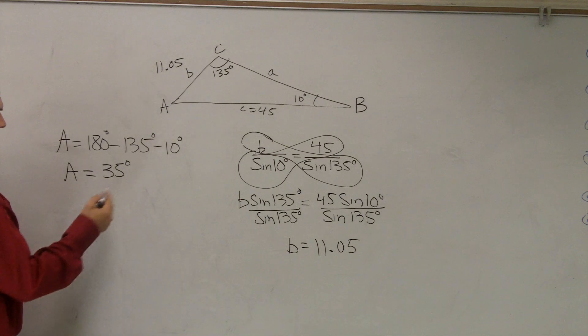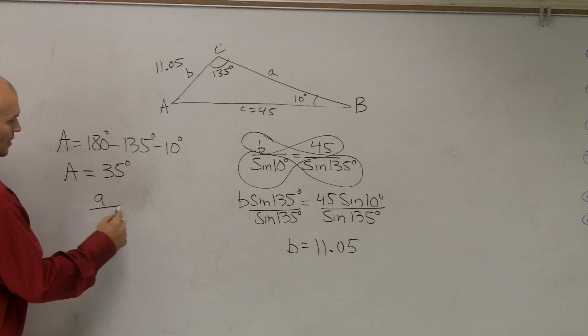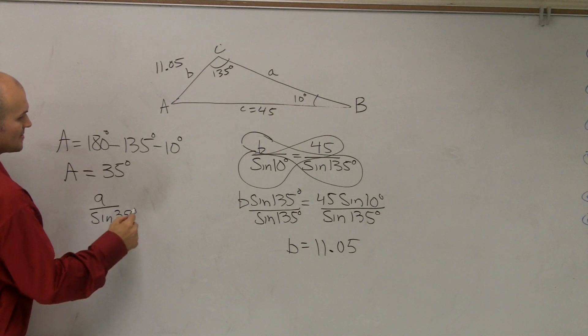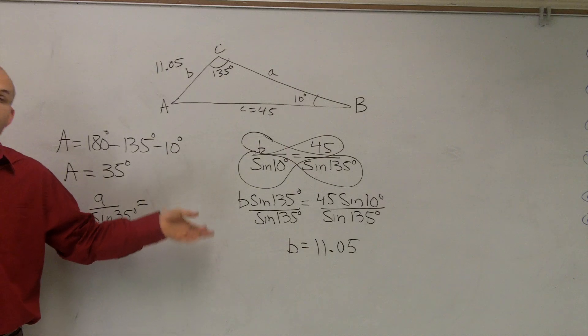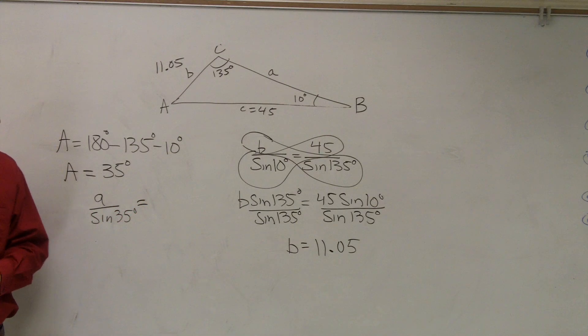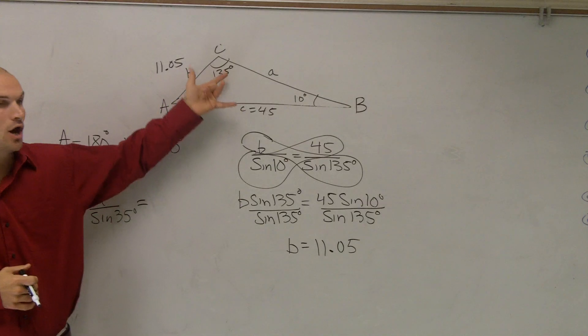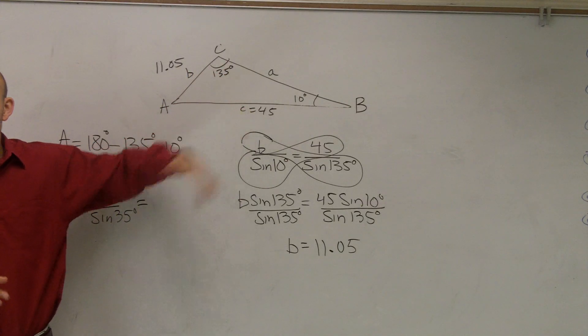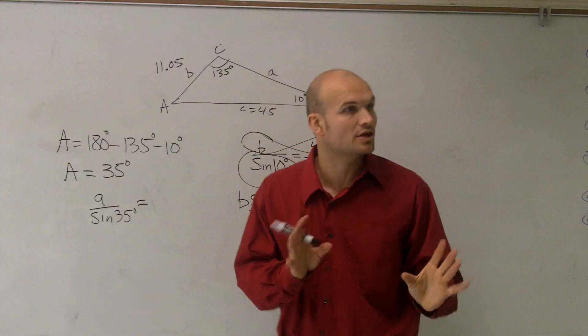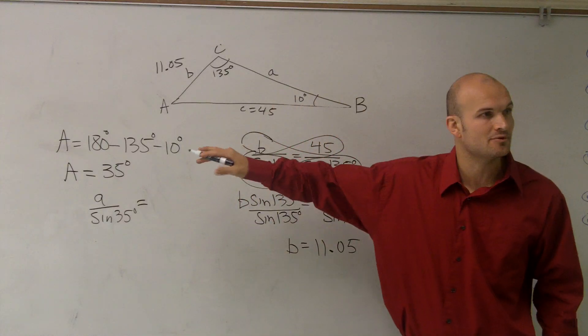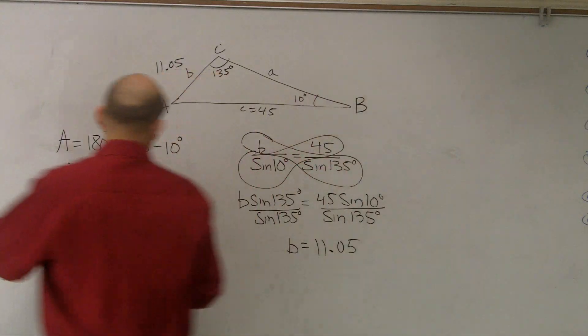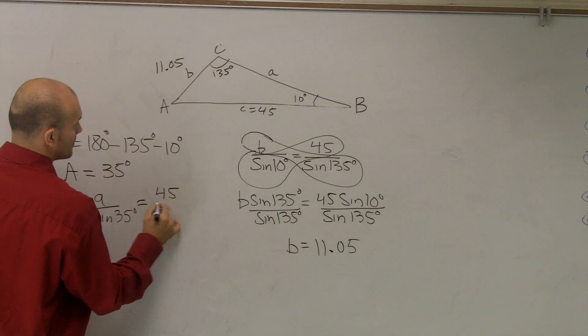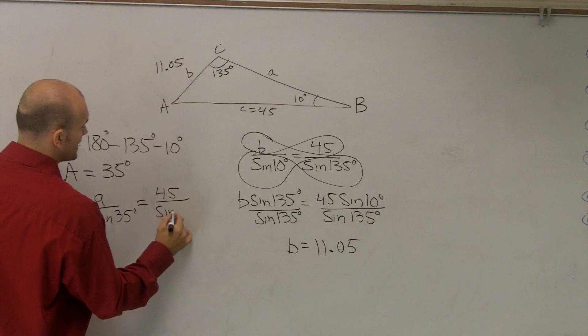So now, I can set up. I can say A over sine of 35 degrees equals one of the ratios. You could say it equals B over sine of B, or you could say it equals C over sine of C. It doesn't really matter which one you choose. I think it's a safer pick always to pick the one that's given, just in case you made some small calculation error, you know, and you don't have time to recheck it. It's always just helpful just to reuse that one rather than your own calculations. So I would pick 45 over sine of 135.